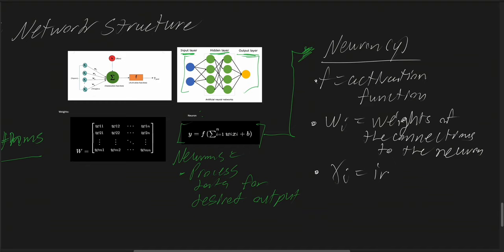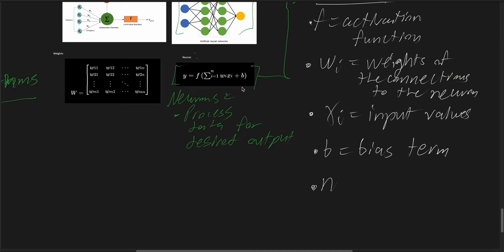x_i refers to the input values, b is referred to as the bias, and n is comprised of the number of inputs to the neuron.